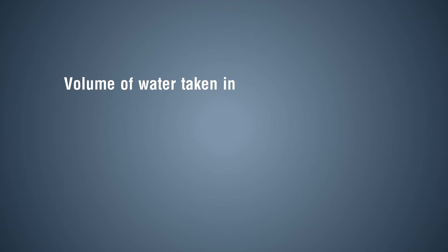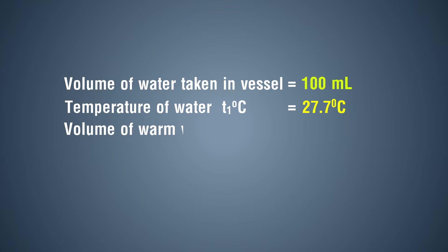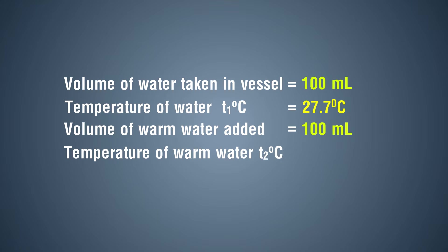Observation: Volume of water taken in vessel = 100 milliliters. Temperature of water T1 = 27.7 degree Celsius. Volume of warm water added = 100 milliliters. Temperature of warm water T2 = 38.2 degree Celsius.